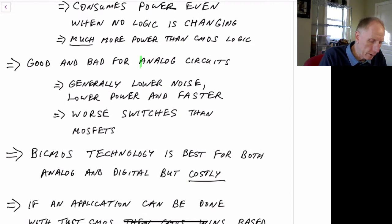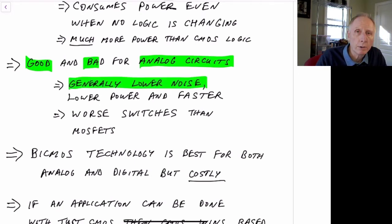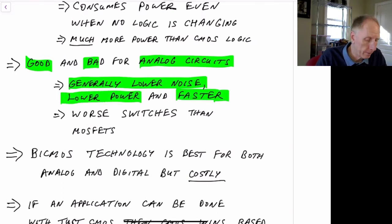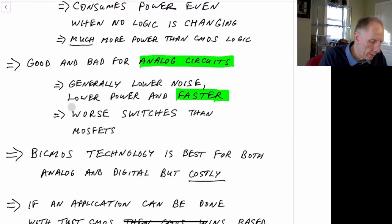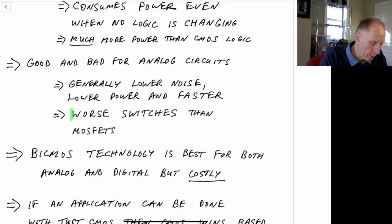In terms of analog circuits, there's good and bad. Generally, bipolar circuits have lower noise, lower power, and they're faster than their CMOS equivalent. So for analog, using bipolar transistors could be better. However, as a switch they don't work as well.